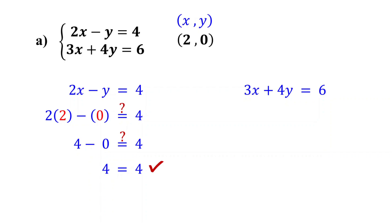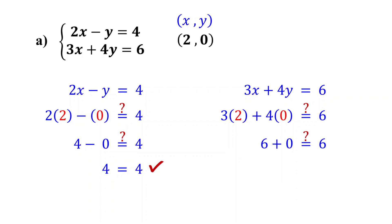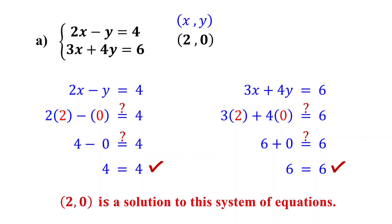However, for the ordered pair to be a solution to the system, it must also work for the second equation. As we did before, substitute x with 2 and y with 0. 3 times 2 is 6 and 4 times 0 is 0. 6 plus 0 is 6, and 6 is indeed equal to 6. So it also satisfies the second equation. Therefore, since the ordered pair (2, 0) makes both equations true, it is a solution to this system of equations.